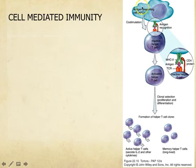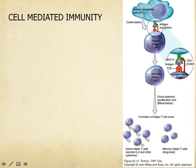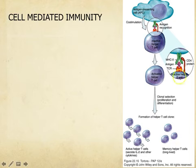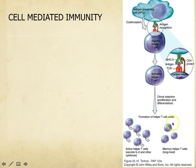So if an antigen-presenting cell has come across some bacteria or virus in the bloodstream, it engulfs it, processes it, and inserts the antigen onto the MHC2. It goes back to the lymph node, finds a helper T cell that recognizes it, and that T cell's receptor binds to the antigen. The CD4 protein docks with the MHC2, activating the helper T cell, which then starts dividing and differentiating into the active form and the memory form.